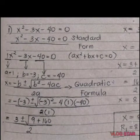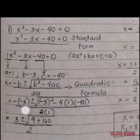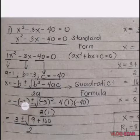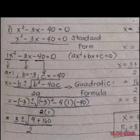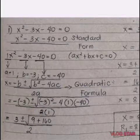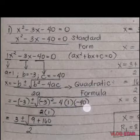Now substitute. Write the negative sign on the formula and then the value of b, which is negative 3. That will later on become positive 3 because negative times negative is positive. So copy the plus or minus sign and then the radical sign. The value of b, which is negative 3, is squared, minus 4 times 1, the value of a, which is 1, and then the value of c, which is negative 40.